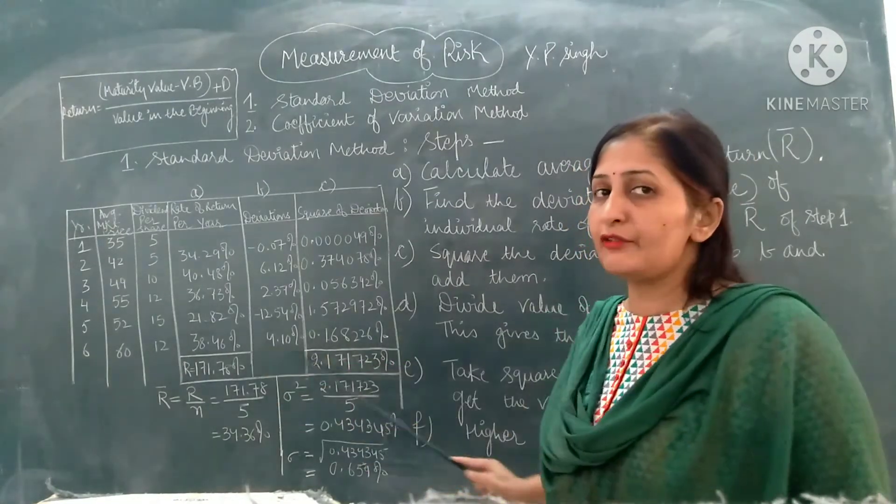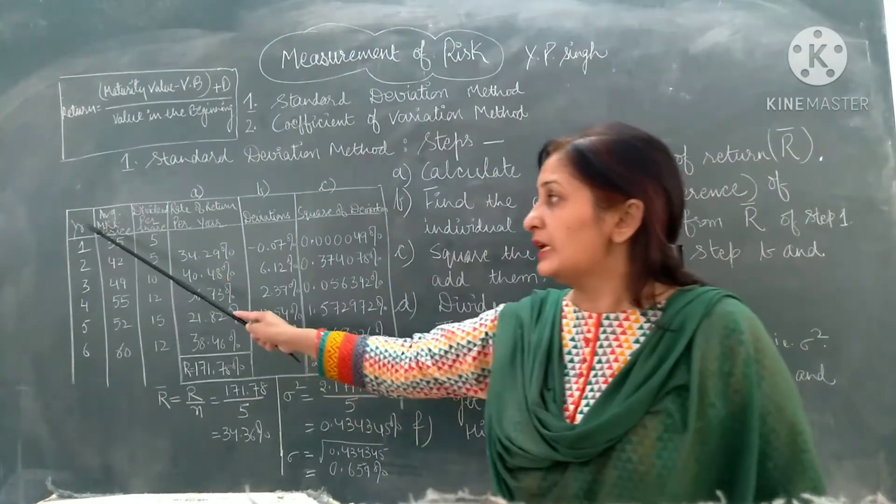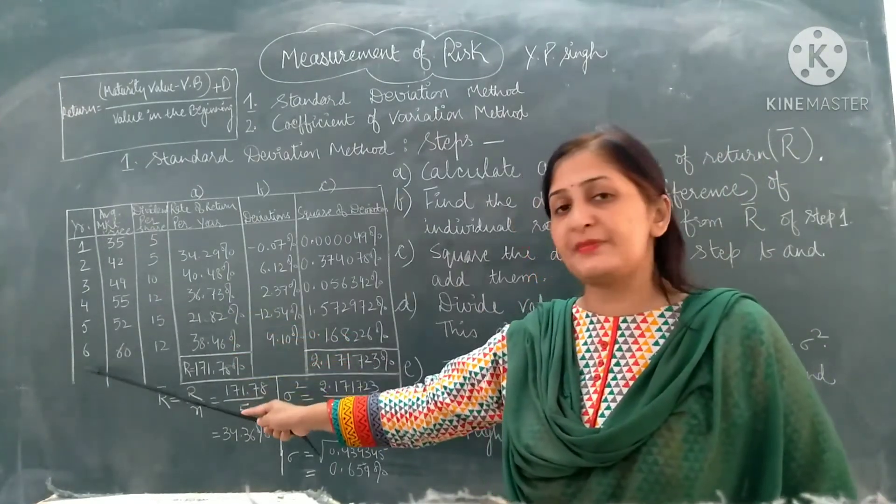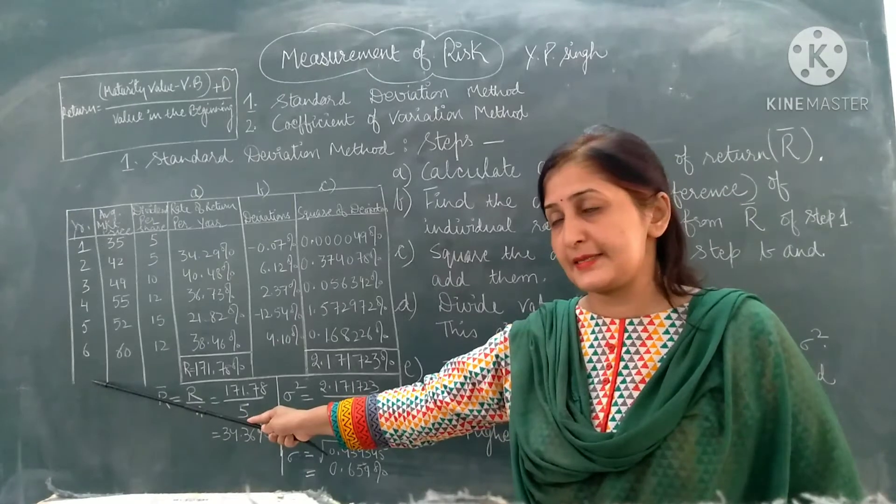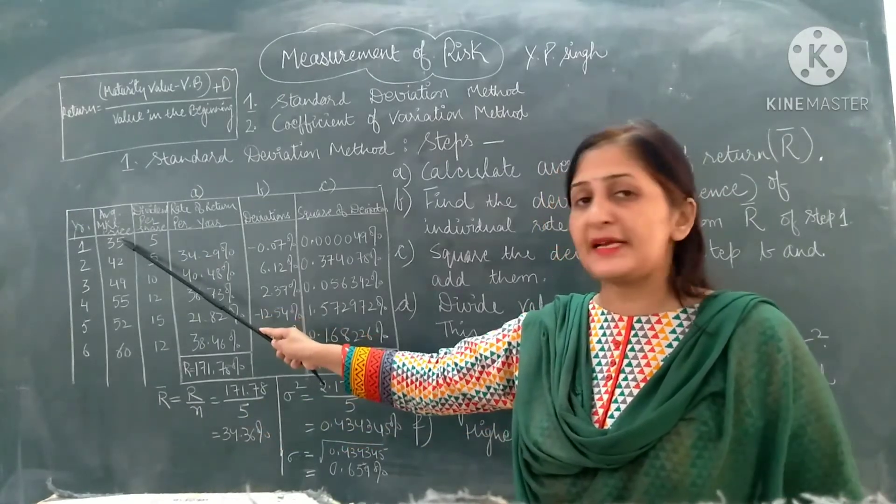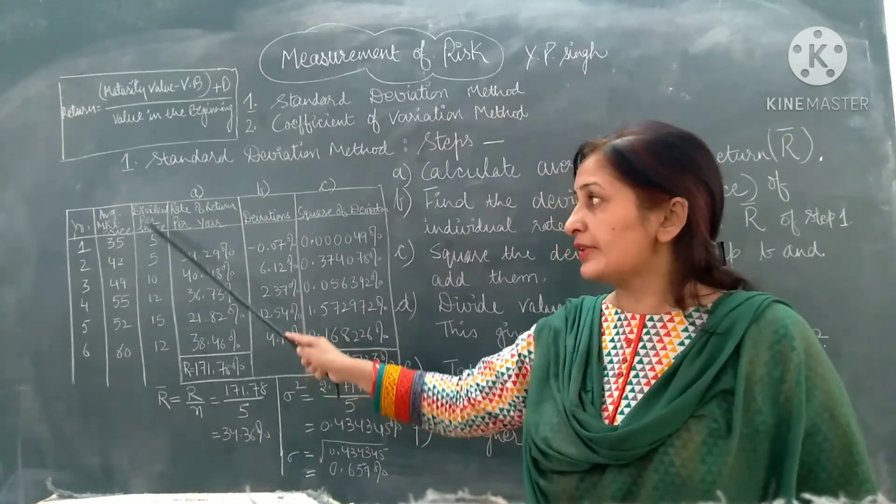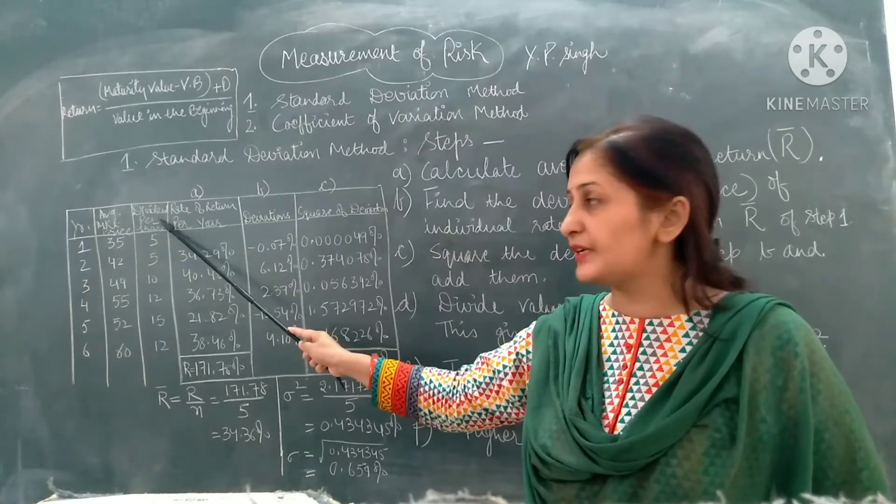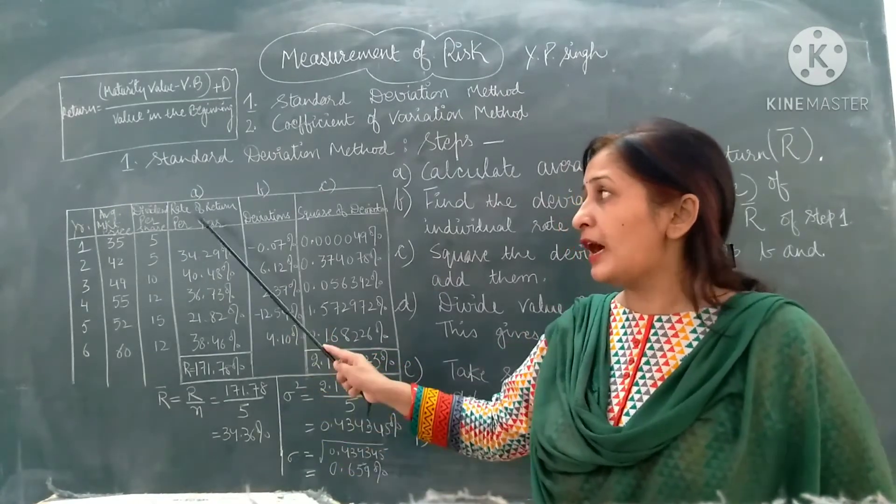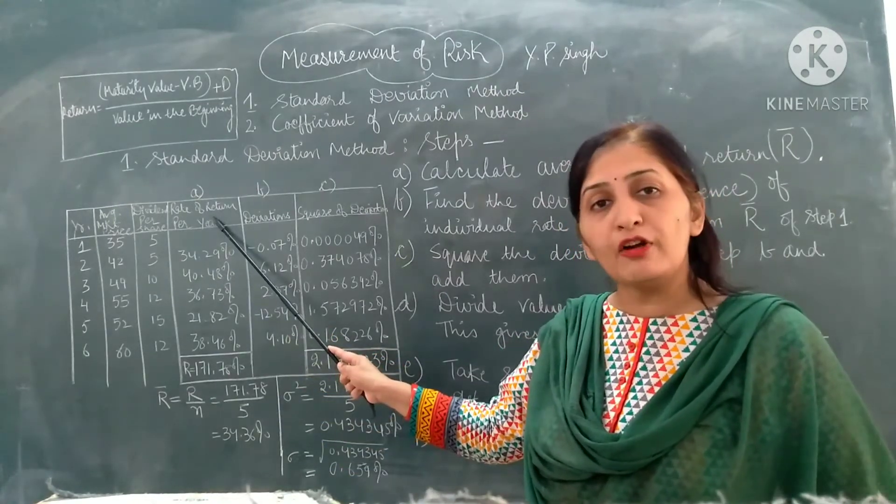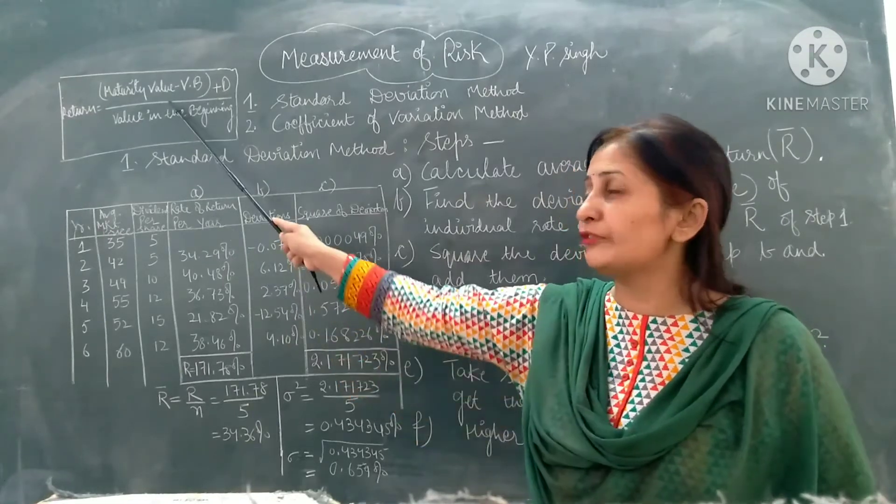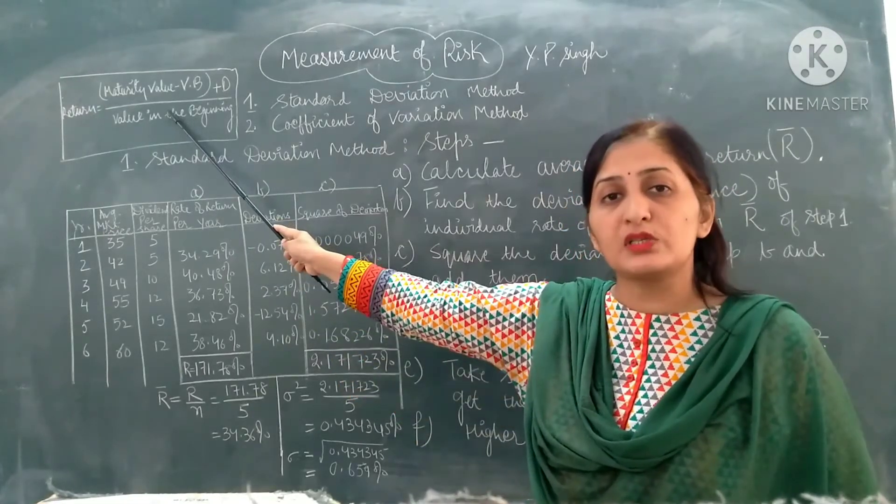In this table, you can see that we are given the information: an investor makes an investment for, let's say, 6 years. Average market price is given in these terms, then we are given dividend per share in these terms. Now we have calculated the rate of return with the help of the formula which we have discussed earlier also.